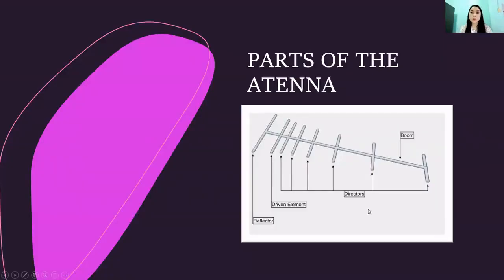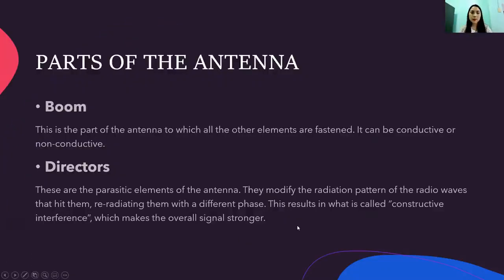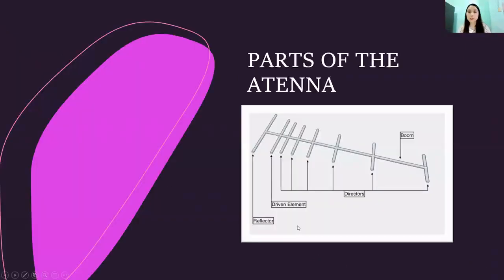I will be discussing the parts of the antenna. So, first is the boom. This is the part of the antenna to which all the other elements are fastened. It can be conductive or non-conductive. So, as you can see here in the picture, the boom is in the middle part of the antenna. So, this is the boom. So, without the boom, the whole antenna is a lot less effective because basically, this is the one that holds the directors, the driven element, and the reflector.